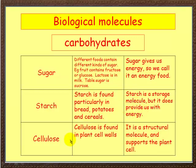Lastly, cellulose. Cellulose is found in plant cell walls. We don't contain cellulose - we don't have the enzyme to digest it - but it's found in plant cell walls. It's a structural molecule that supports the plant cell and stops it from collapsing. Okay, that's carbohydrates.